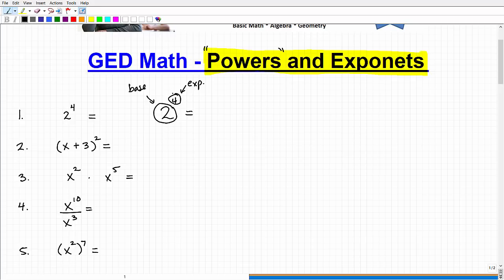2 to the fourth power is very simple. It just means take the base, whatever that is, and multiply it by itself this many times. So that's going to be 2 times 2 times 2 times 2. When I multiply them together, I get 16. So 2 to the fourth power is equal to 16.